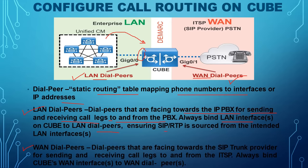You need to always bind the LAN interface on the CUBE to LAN dial peers, ensuring SIP is sourced from the intended LAN interface. WAN dial peers work the same way but face towards the SIP trunk provider — used for sending and receiving calls to and from the ITSP. You bind the LAN interface IP to LAN dial peers and the WAN interface IP to WAN dial peers.